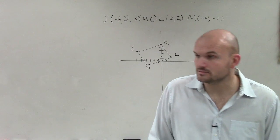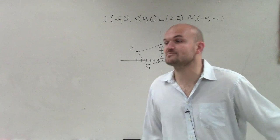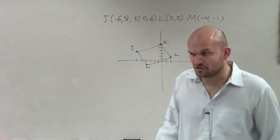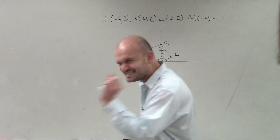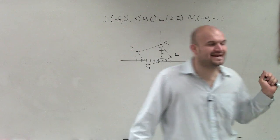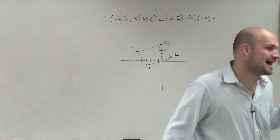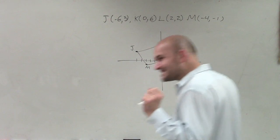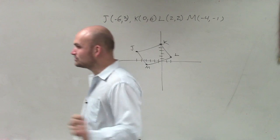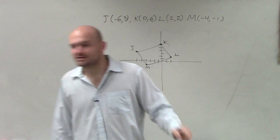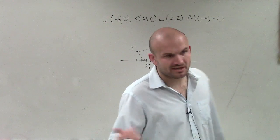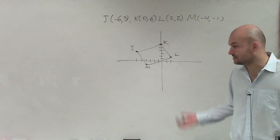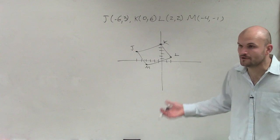Yeah, it looks like one. Do we know for absolute positive that it's a rectangle? Do we know those angles are exactly 90 degrees, not 89.99? Do we know the diagonals are exactly equal to each other, not one is off by one millionth of a degree? Do we know that? No. It looks like a rectangle, though.